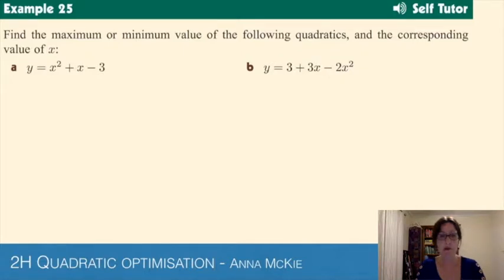We're asked to find the maximum or minimum value of the following quadratics and the corresponding value of x. How do we go about that? You identify - remember it was -b/2a - so you need to know your a and b values. Looking at this quadratic, a is the coefficient of x², b is the coefficient of x, and we get a=1, b=1, and c=-3.